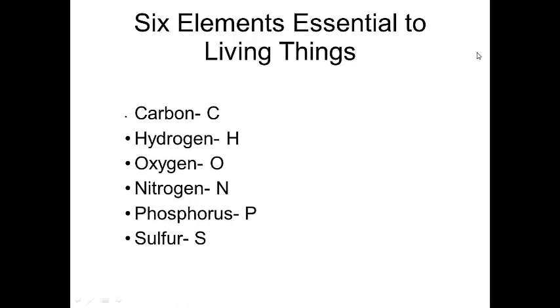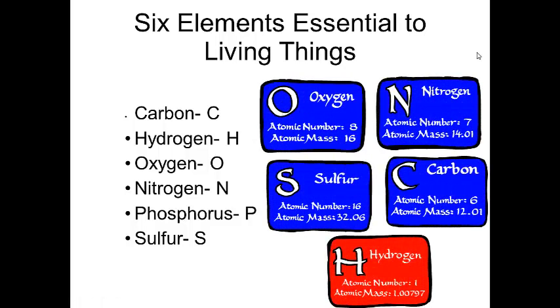So the six elements that are essential to all living things are carbon, hydrogen, oxygen, nitrogen, phosphorus, and sulfur. So we can see what some of them are, and their symbols are right next to them. And this is nice and easy because the symbol for each is always the first letter of the word.